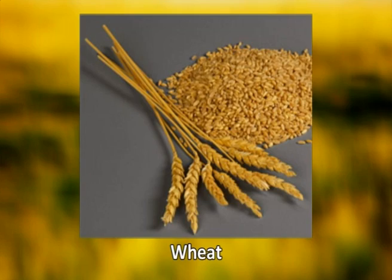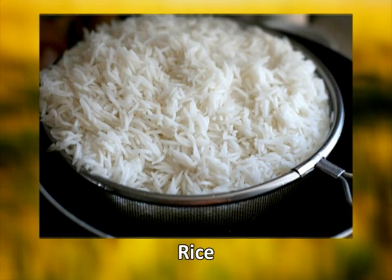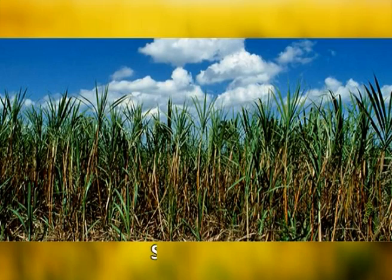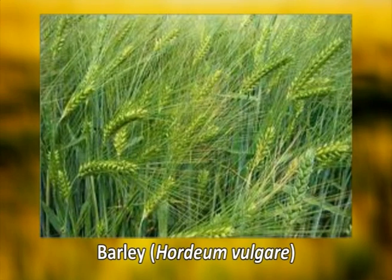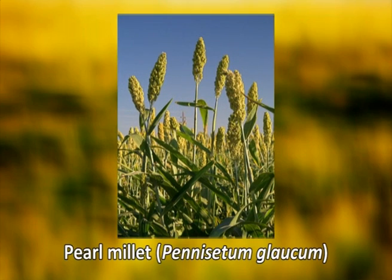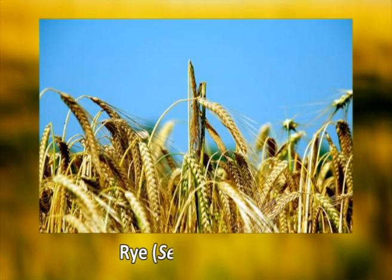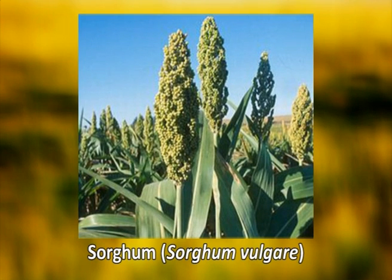In terms of global agricultural production, the four most important crops are wheat, rice, maize, and sugar cane. Some other food crops in the family include barley (Hordeum vulgare), pearl millet (Pennisetum glaucum), rye (Secale cereale), and sorghum (Sorghum vulgare).